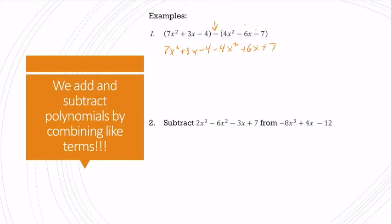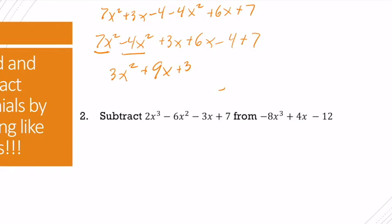I'm going to rearrange this example. So I've got 7x squared minus 4x squared plus 3x plus 6x minus 4 plus 7. And I rearranged my terms so that the like terms were close to each other. So we can see how I would add or subtract their coefficients. So if I have 7x squared minus 4x squared, that becomes 3x squared. If I have 3x plus 6x, that's just going to give us 9x. And if I have negative 4 plus 7, that's going to give me a positive 3. So now I have a trinomial of degree 2.